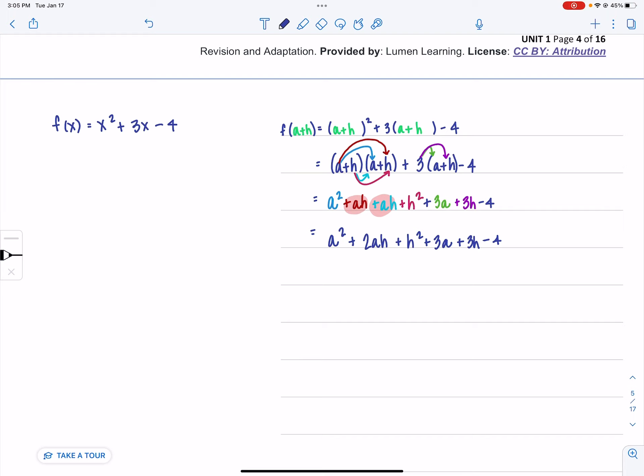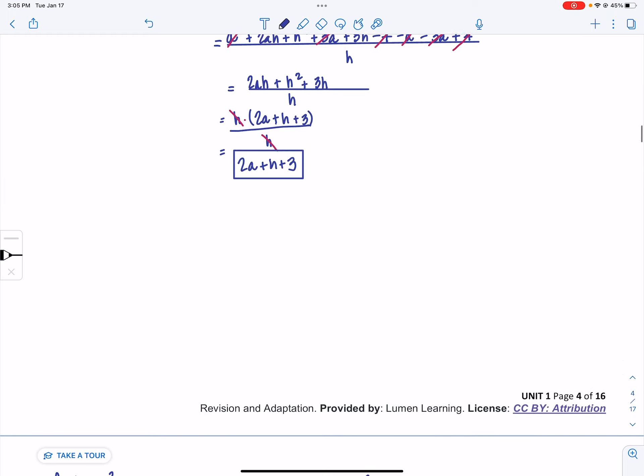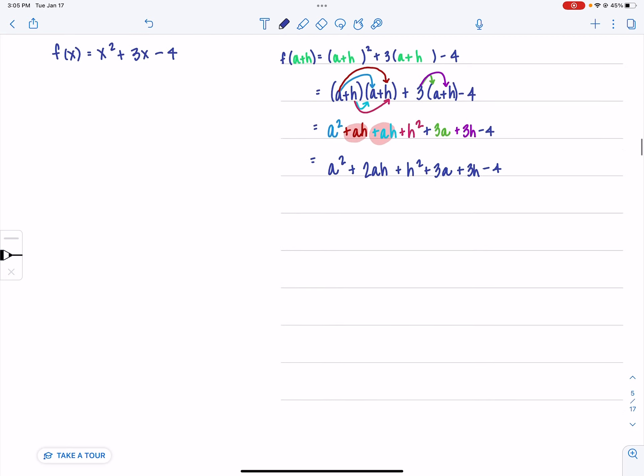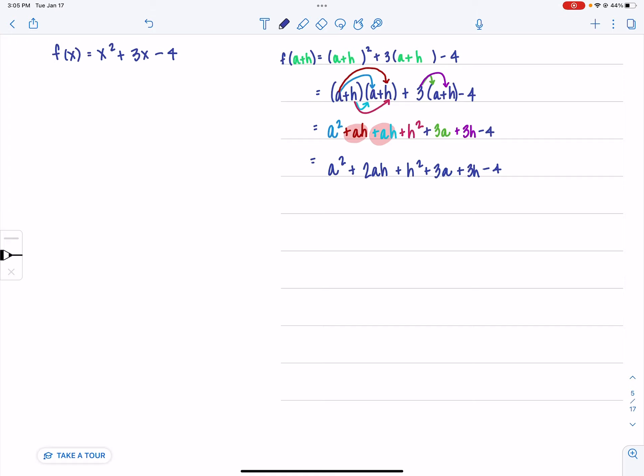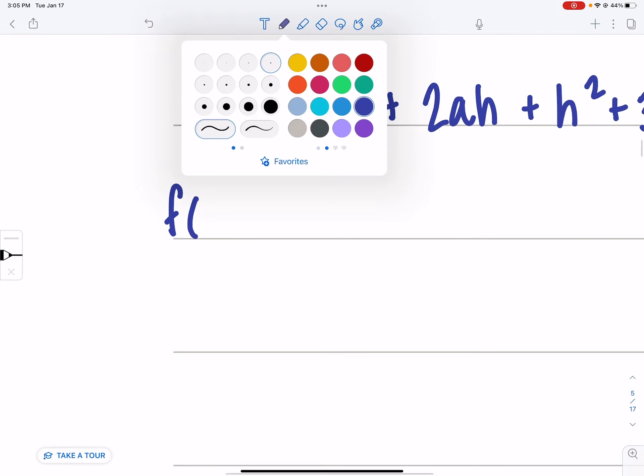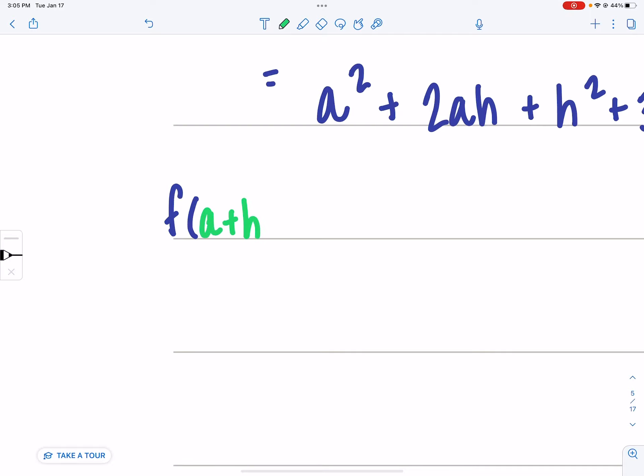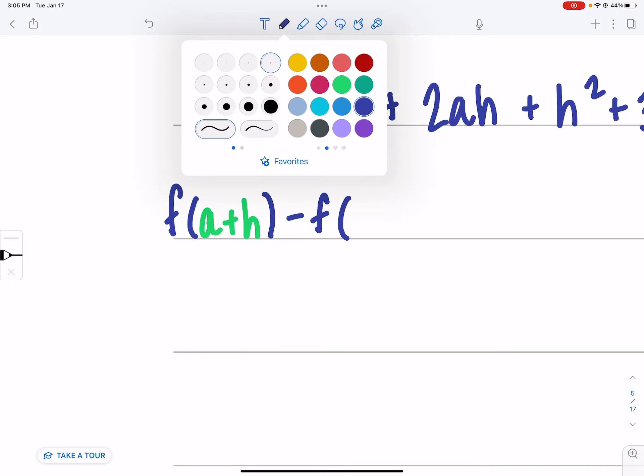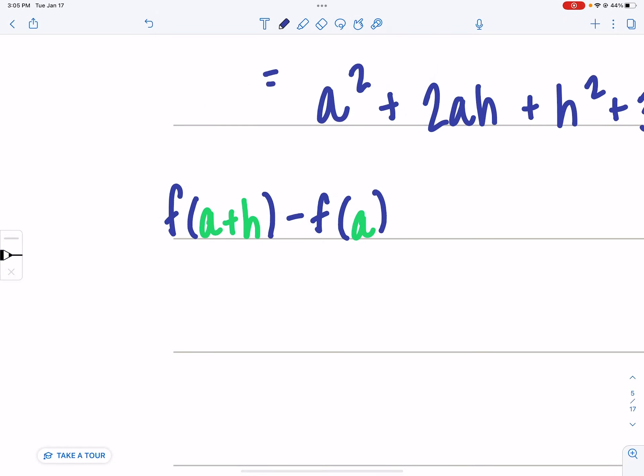Now a second one that was pretty sticky was the same function, but we wanted a plus h minus f of a, all divided by h. Here we go.